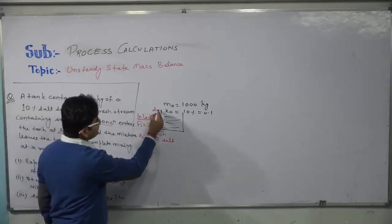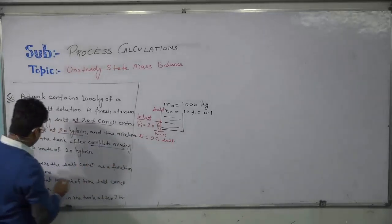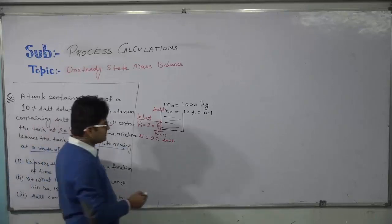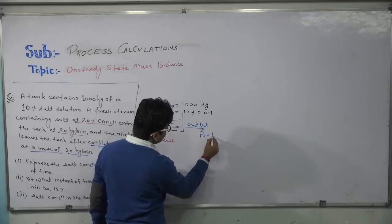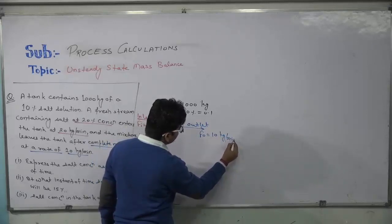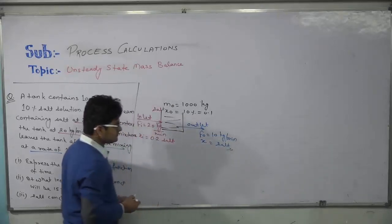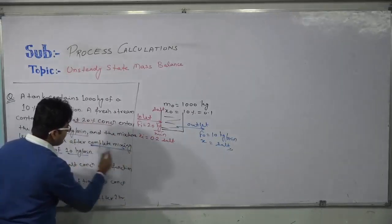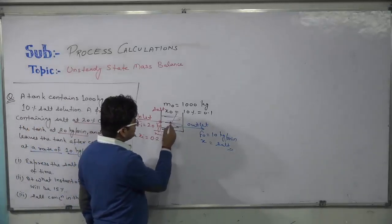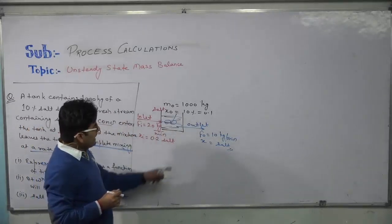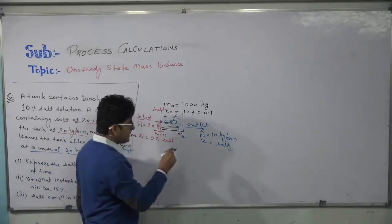The solution leaves the tank after complete mixing at a rate of 10 kg per minute. The outlet flow rate F₀ is 10 kg/min and the mass fraction of salt at the outlet is x. Since complete mixing is given, concentration throughout the tank is uniform, meaning the concentration at the outlet and within the tank will be the same, equal to x at any time.